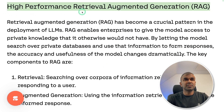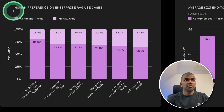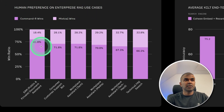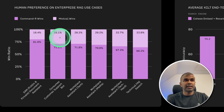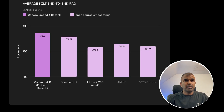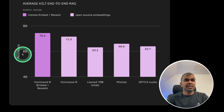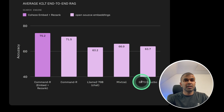It has high performance in retrieval augmented generation. Looking at human preference on enterprise RAG use cases, the dark pink is Command R and the light pink is Mixtral — you can see the comparison here. In end-to-end RAG accuracy, Command R is higher compared to Llama 2 70B, Mixtral, and GPT-3.5 Turbo.